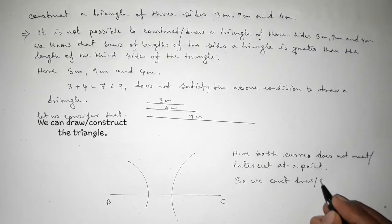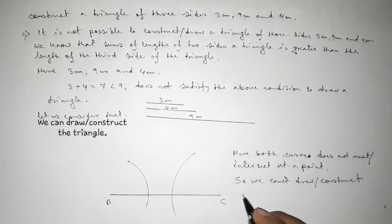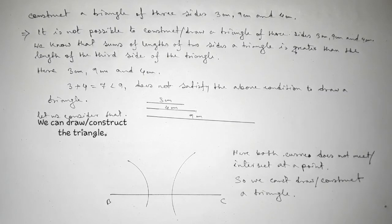So we cannot construct or draw a triangle with sides three centimeter, nine centimeter, and four centimeter. That's all. Thanks for watching. If this video is helpful to you, please share it with your friends.